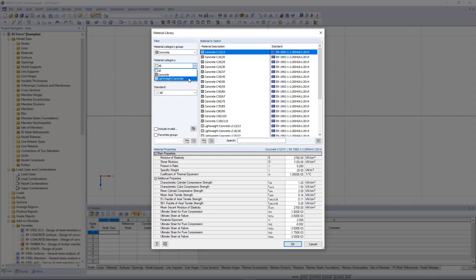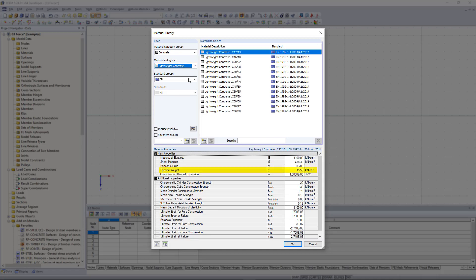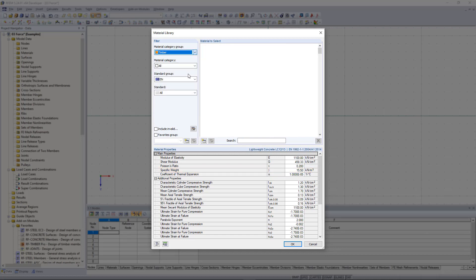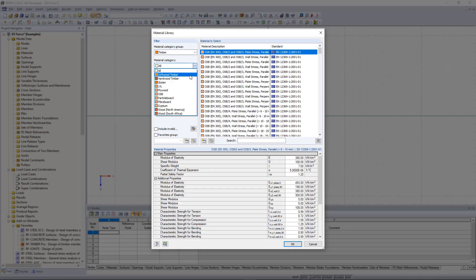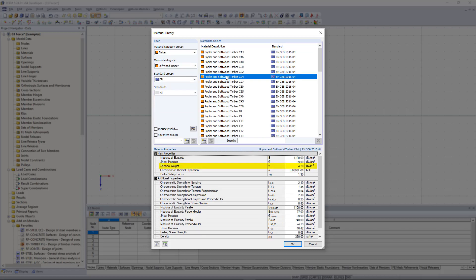However, lightweight concrete has a lower specific weight. For a timber material, we select a softwood. Here you can also see that the specific weight increases with the higher strength class.